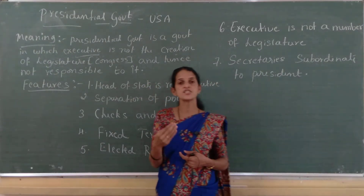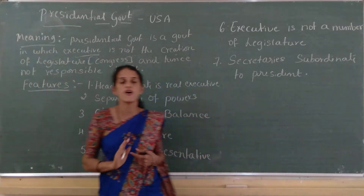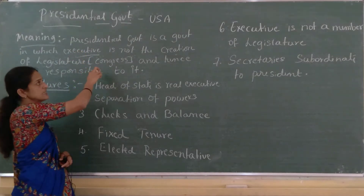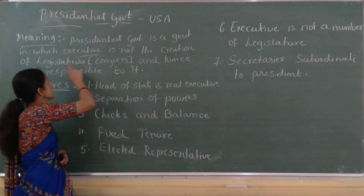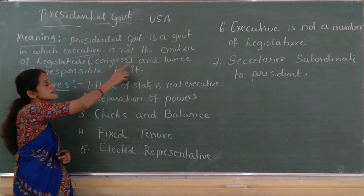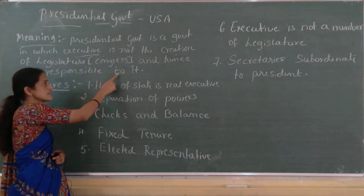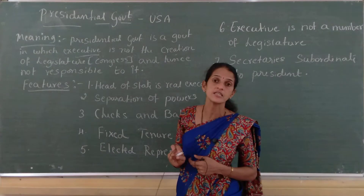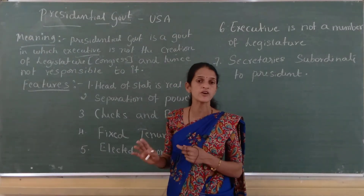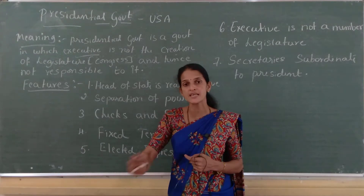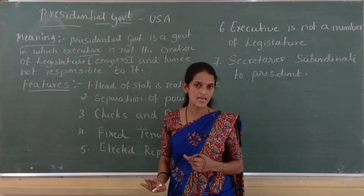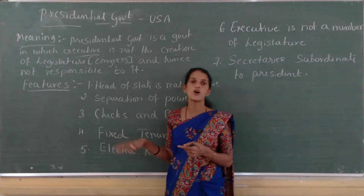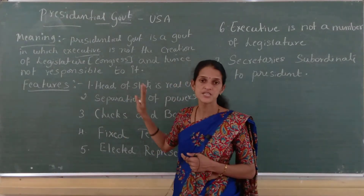Presidential form of government means the president or the executive is not the creation of the legislature or congress, and hence the executive is not responsible to the legislature. Because the executive is not created by the legislature, the executive is not responsible to the legislature. This form of government is called the presidential form of government.